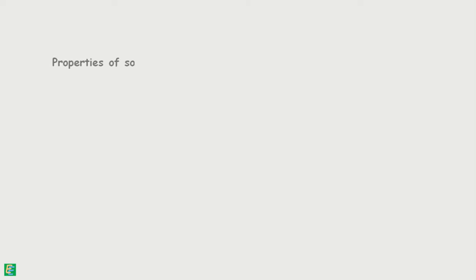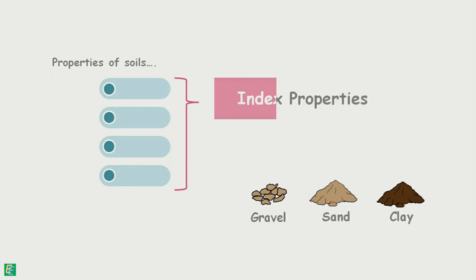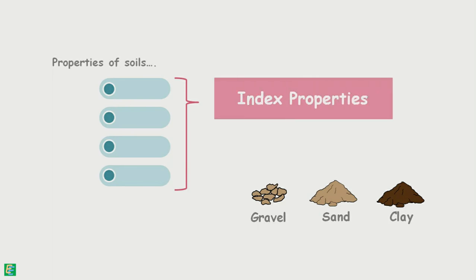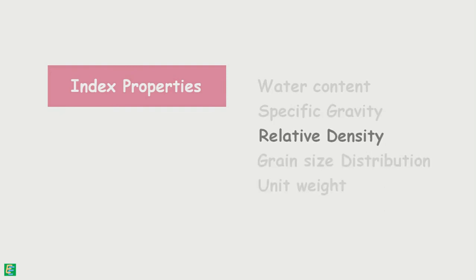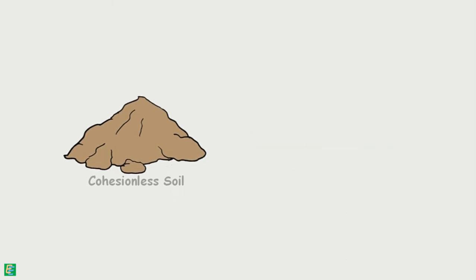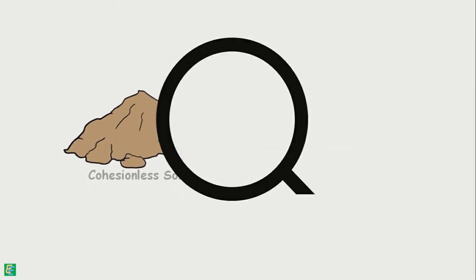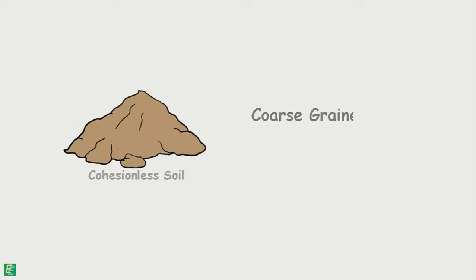Properties of soil that help in identification and classification of soil are called index properties. Among all the index properties, relative density is the most important property of the cohesionless soil. Cohesionless soils are those whose particles do not stick with each other. These soils are generally coarse-grained soils, such as gravels and sand.